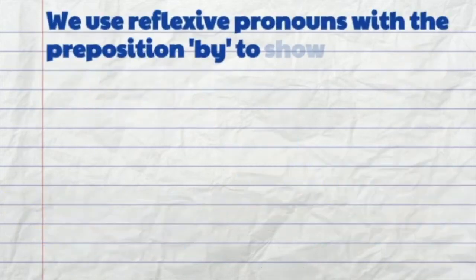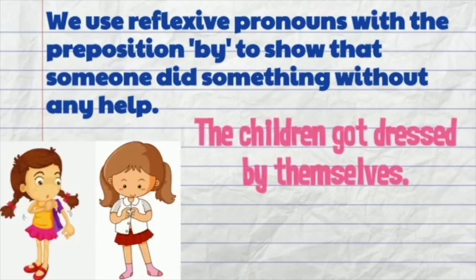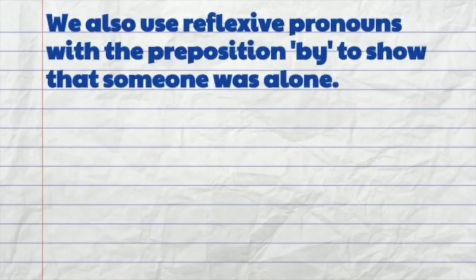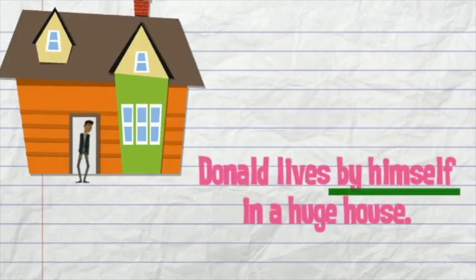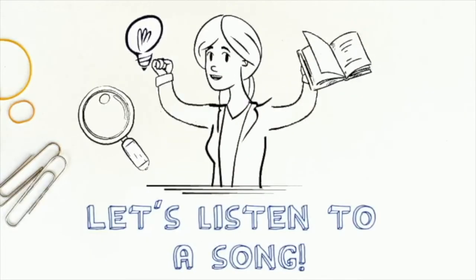In P4, we learned to use reflexive pronouns with the preposition 'by' to show that someone did something without any help. For example: the children got dressed by themselves. We can also use reflexive pronouns with 'by' to show that someone was alone. For example: she was walking home by herself. Donald lives by himself in a huge house. Here is a song about reflexive pronouns — enjoy!